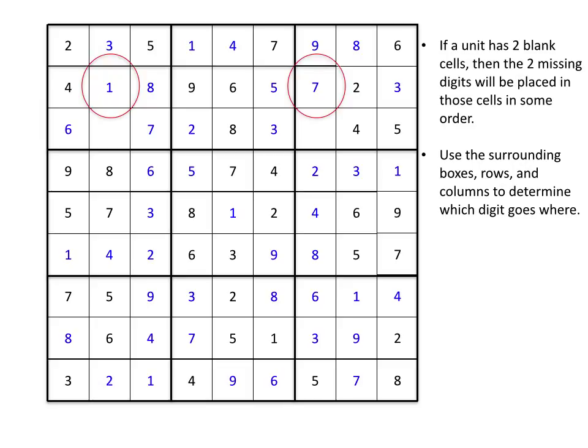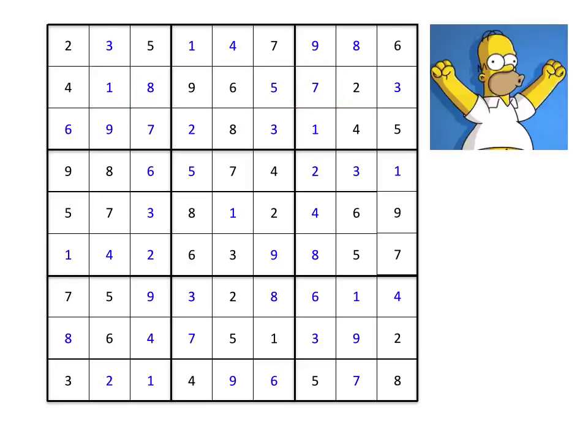So each box now has one cell missing from its 3x3 box and the left-hand box is missing a 9 and the right-hand box is missing a 1. So once we fill those in, we have finished the puzzle. And we have successfully solved the Sudoku.